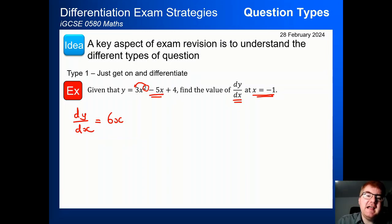When we differentiate a linear part here, minus 5x, we just take the coefficient in front of the x, so minus 5, and wherever we're differentiating the constant term, the number here, that always goes to 0. So we have our dy by dx equal to 6x minus 5.